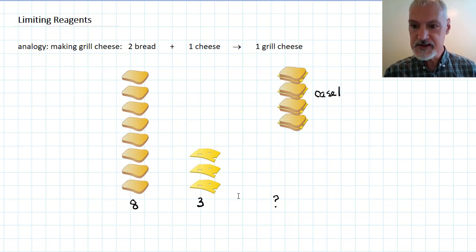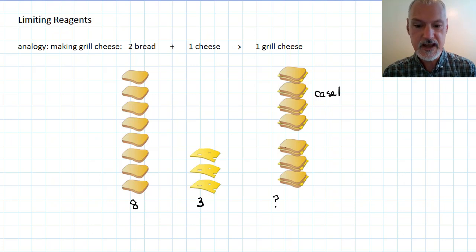In the second case we'll consider just the cheese. With three slices of cheese we should only be able to make three grilled cheese. That would then be case number two.